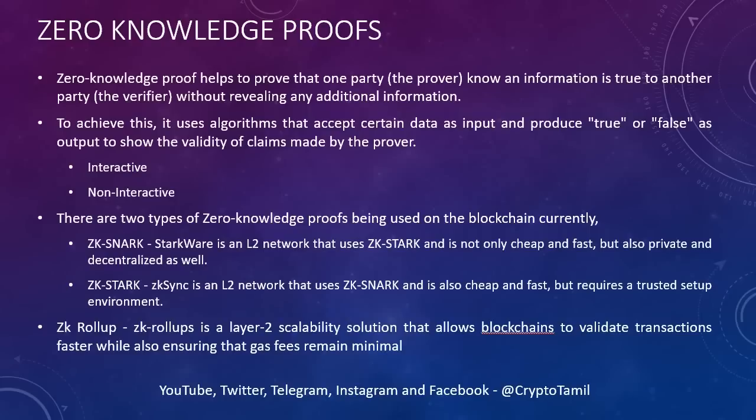Basically, it's two types: one is interactive and one is non-interactive. With interactive, you have to test each time, so that takes time. That's why we use non-interactive methods. In non-interactive, you use cryptography. After the blockchain side, the non-interactive methods are used on the blockchain. So you can use two types of zero-knowledge proofs: one is ZK Snark and one is ZK Stark.